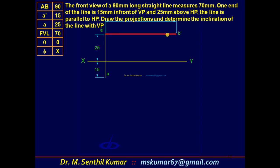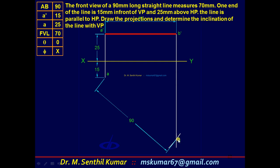Since the front view is completed first, to complete the top view: through b' draw a projector. The true length is 90mm, so set the compass to 90mm, with center a, cut an arc to get point b. Draw line ab — that is the final top view. Measure its angle with XY — this is the true angle φ with respect to VP. φ = 39°, which is the answer.